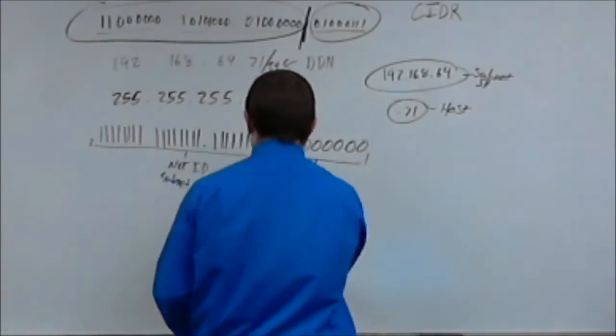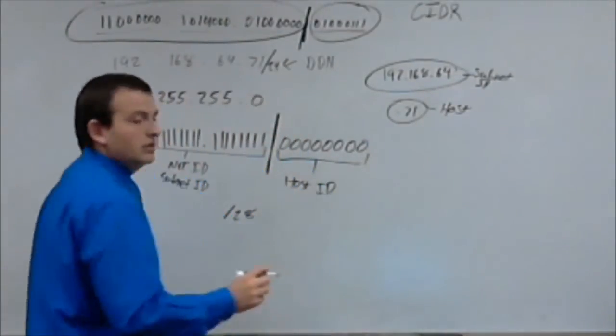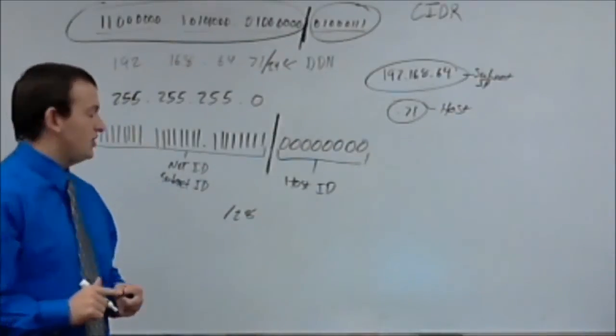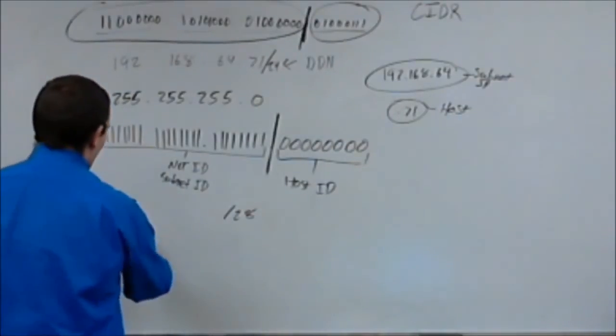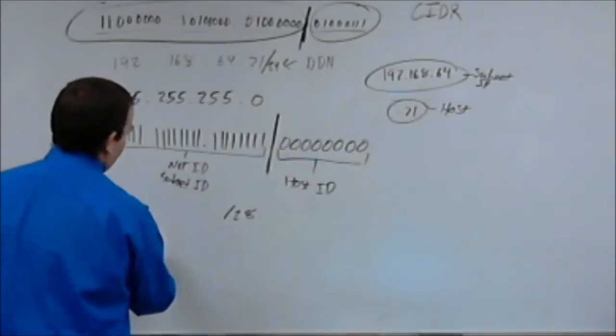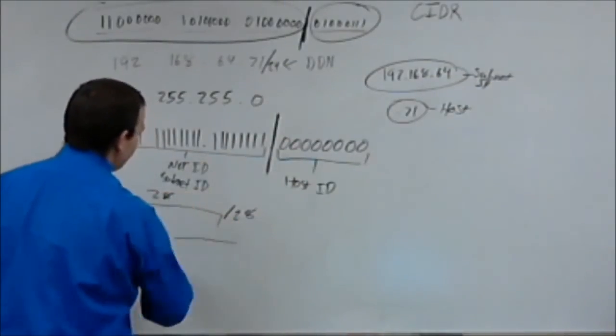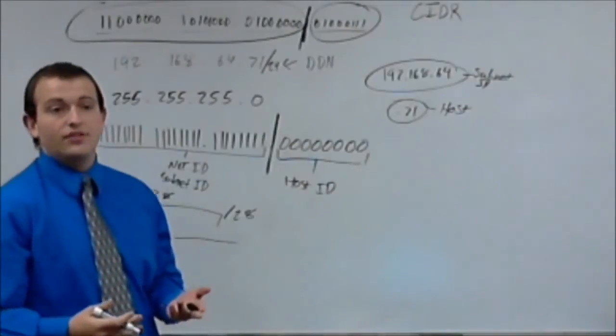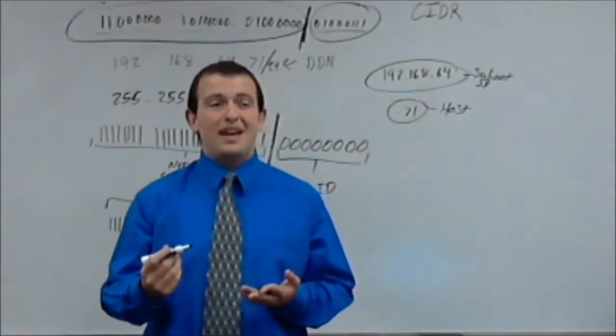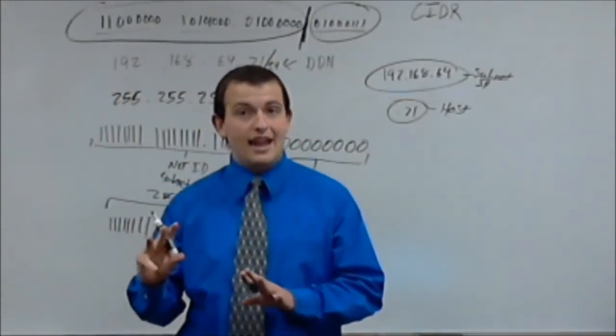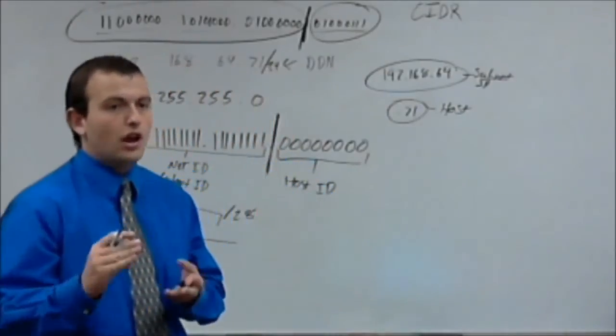So, if we had a slash 28 CIDR notation subnet address, it would be 1, 1, 1, 1, 1, 1, 1, anyway, so on and so forth, until you have 28 ones. And then, of course, you've got 32 bits total, because there are 4 sets of 8, there are 4 octets.